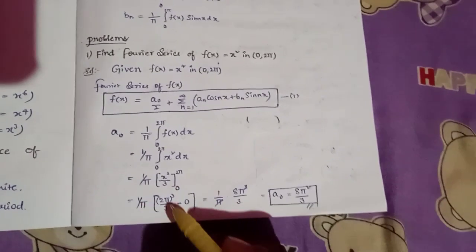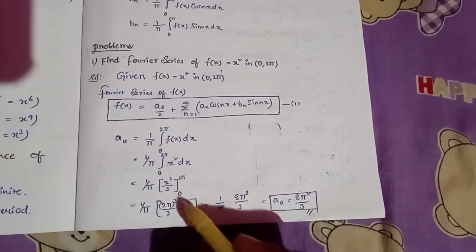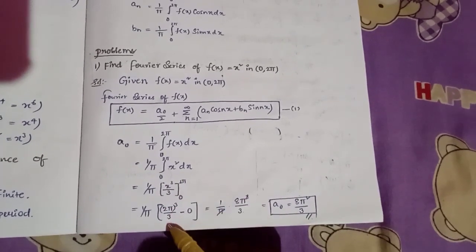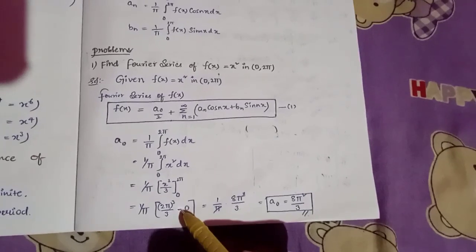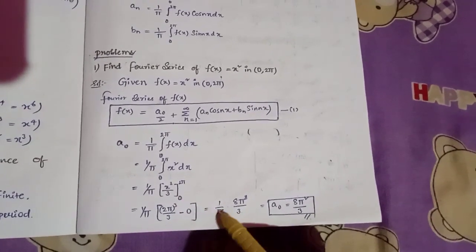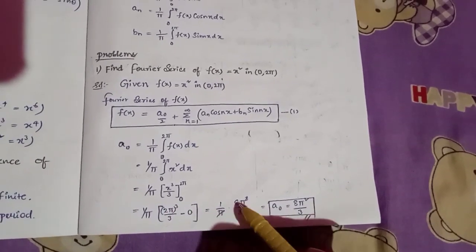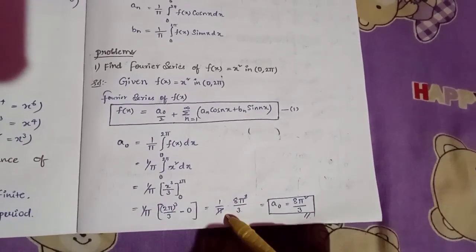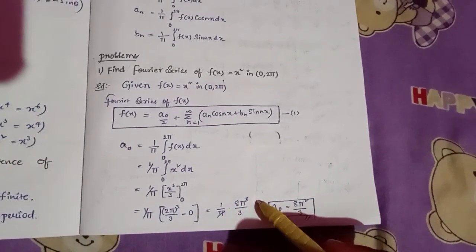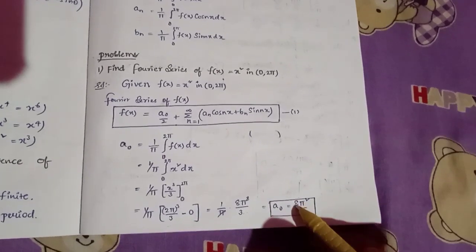The limits are 0 to 2π. Substituting x = 2π: 1 by π times (2π)³ divided by 3. That gives 1 by π times 8π³ divided by 3, which simplifies to 8π² by 3. So a0 is equal to 8π² by 3.